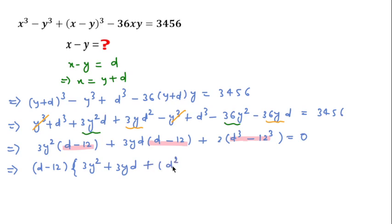So here 3y² plus 3yd, and here after taking d minus 12 common we can write d² plus 12d plus 144 equal to 0. And this equals 0, this means d minus 12 equal to 0 and this whole equals 0.